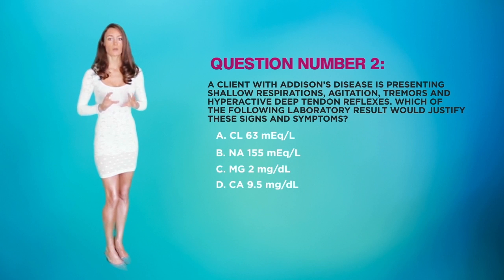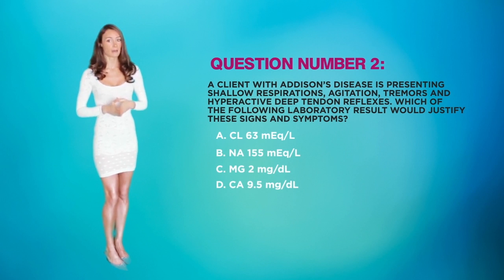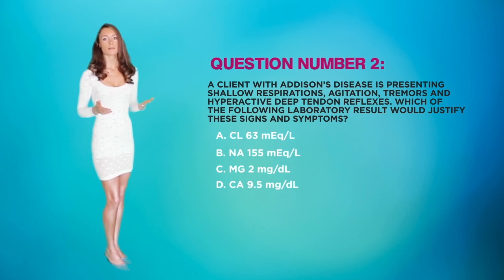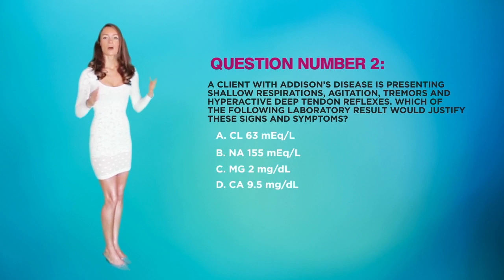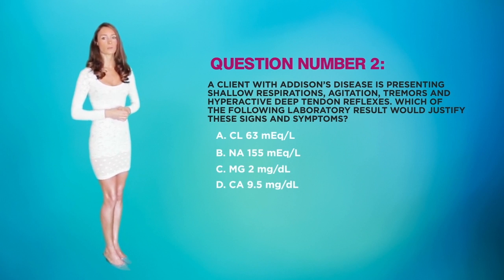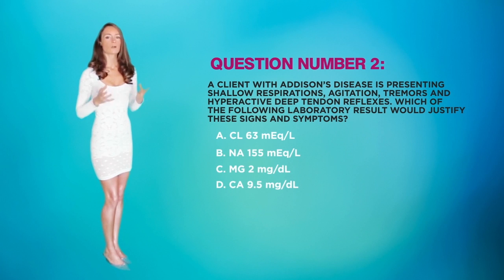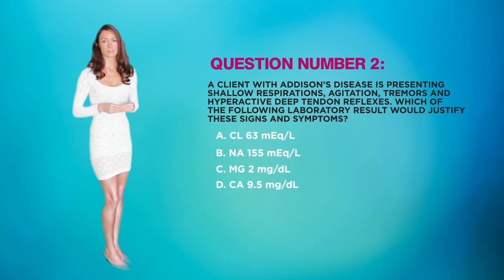Low sodium can also cause muscle twitches. Analyzing the options: a chloride of 63 mEq/L is low (normal is 95–110). A sodium of 155 mEq/L is high (normal is 135–145). A magnesium of 2 is normal (normal range is 1.5–2). A calcium of 9.5 is also normal (normal total calcium is 8.4–10.2). The only abnormal value that aligns with Addison's disease is option A, a chloride of 63, making this the correct and final answer.